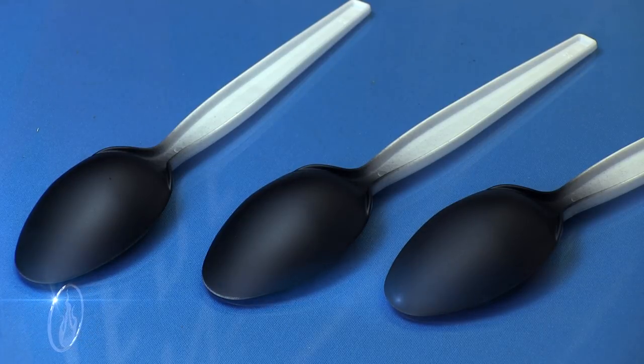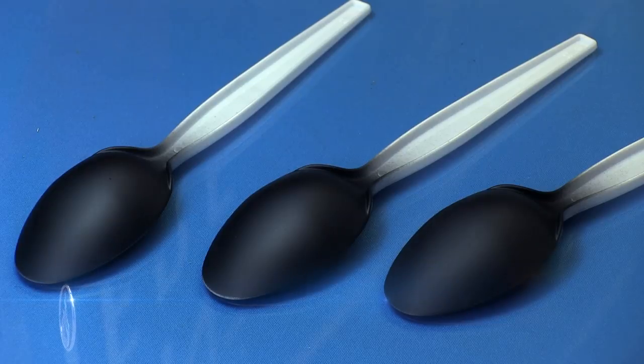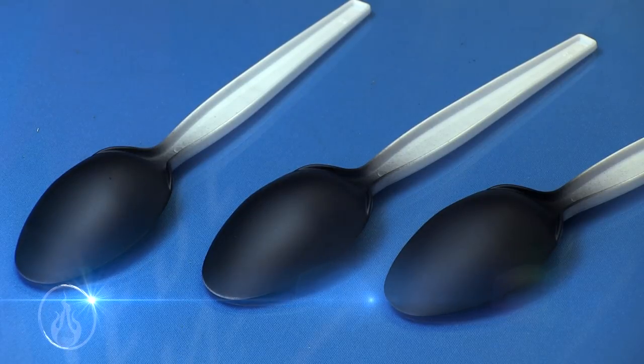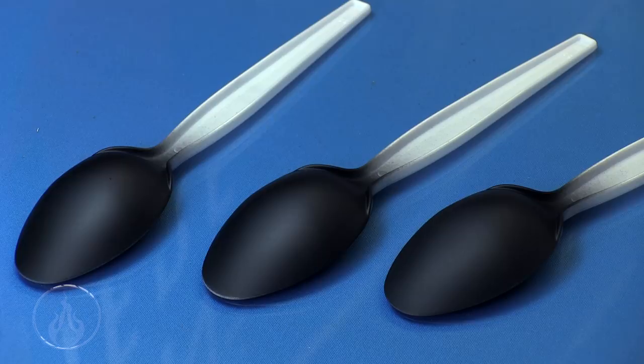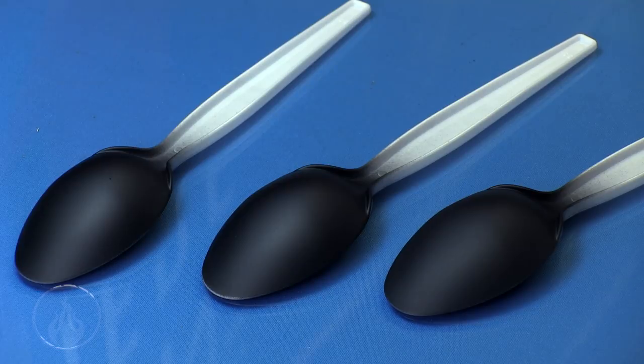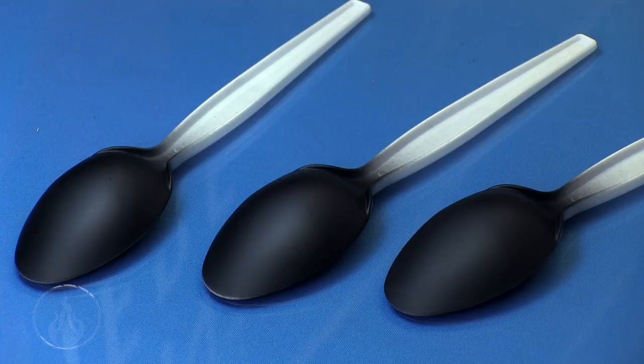As you can see here I've taken three little plastic spoons and I've given them a primer of Vallejo black primer using my airbrush at around 20 psi using a Badger Patriot 105. These spoons here are going to serve as our example because they're nice and smooth.